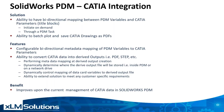We have two solutions in our toolkit. One is the ability to have a bi-directional mapping between PDM variables in CATIA, done through a macro in CATIA and also through a PDM task. We also have the ability to create PDFs of CATIA drawings within SOLIDWORKS PDM.